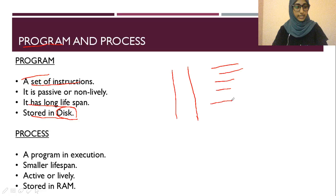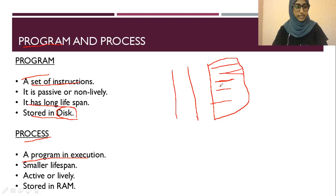When you go and execute that program, it is called a process. A process can be defined as a program in execution. When a program runs, it is called a process. So you have your C program with the header files, main function, and printf statements — when you run it, you get the output. A program is a passive entity and a process is an active entity.